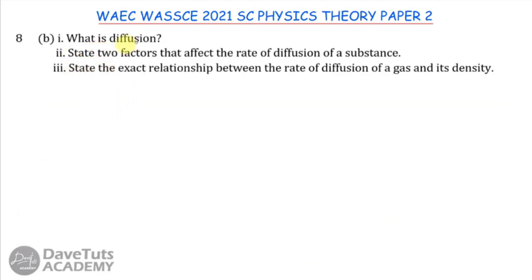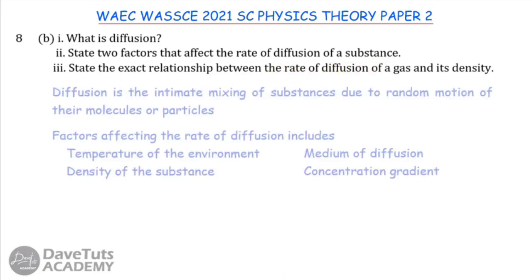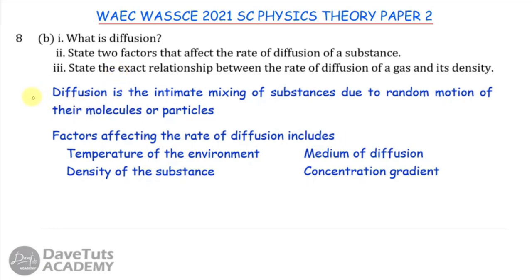In this question on diffusion, diffusion is the intimate mixing of substances due to random motion of their molecules or particles. For example, when someone passes gas, diffusion occurs as the molecules mix with the atmosphere. Factors affecting the rate of diffusion include temperature, medium of diffusion (liquid or gas), density of the substance, and concentration gradient.